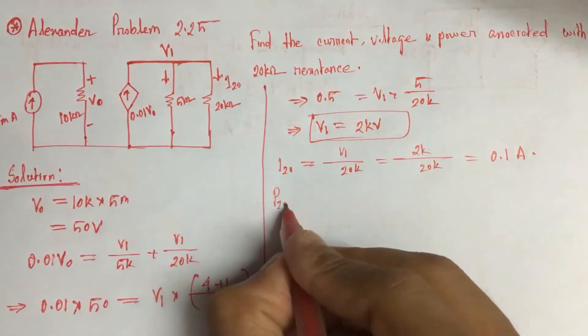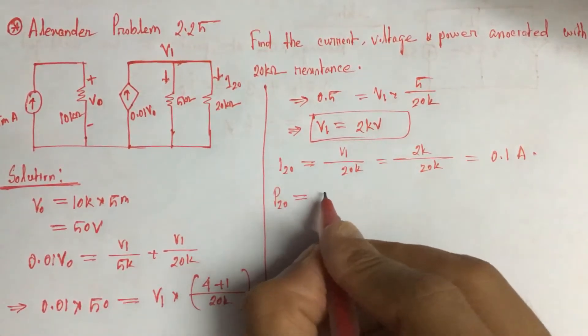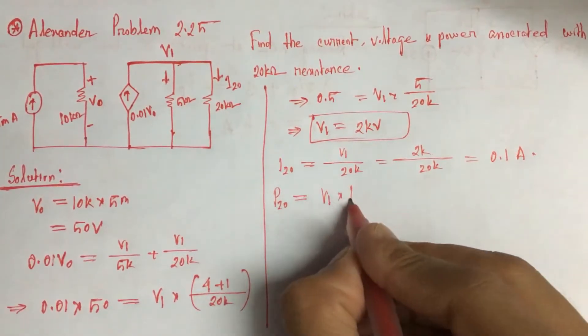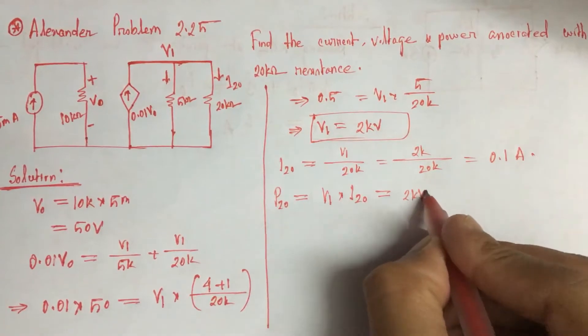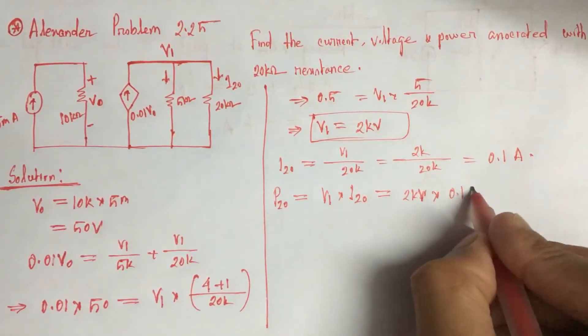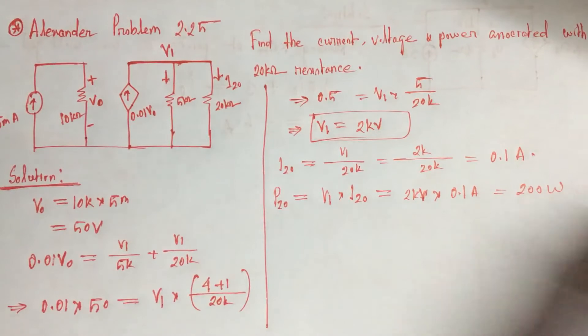Power P20 is equal to V1 times I20. So V1 is 2 kohm, so V1 times current is 0.1 ampere, so this is 200 watts.